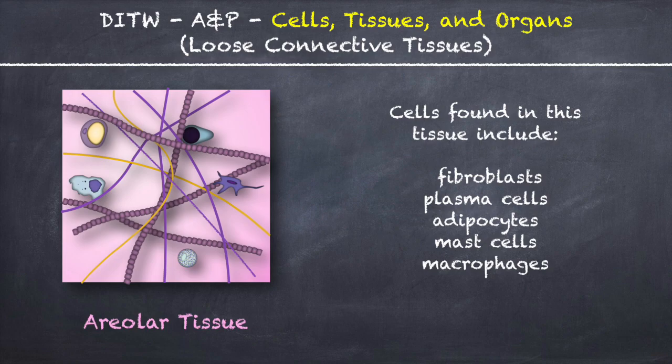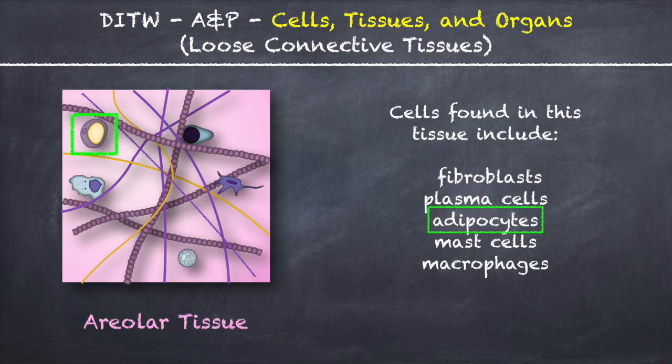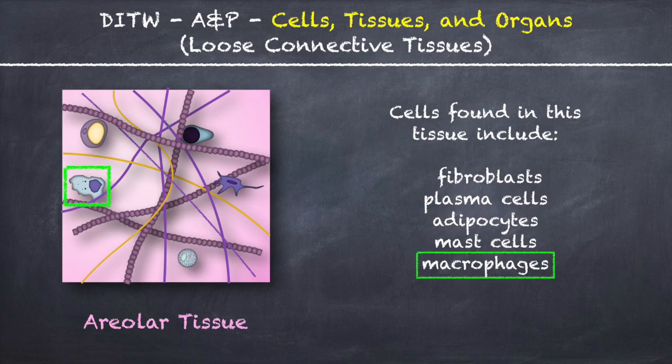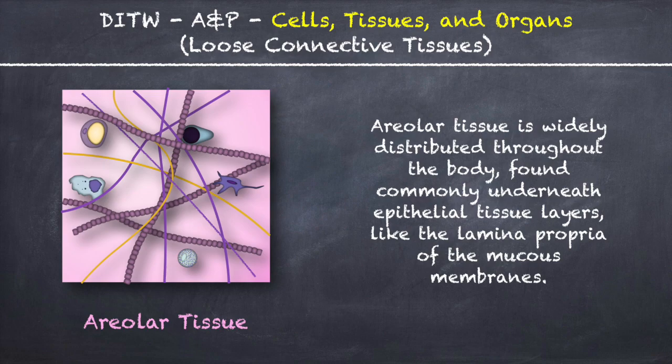Cells found in areolar tissue include fibroblasts, plasma cells, adipocytes, mast cells, and macrophages. Areolar tissue is widely distributed throughout the body, found commonly underneath epithelial tissue layers like the lamina propria of the mucous membranes.